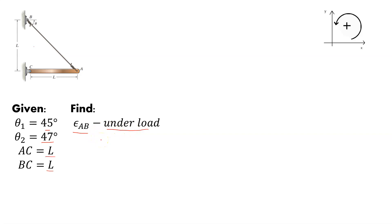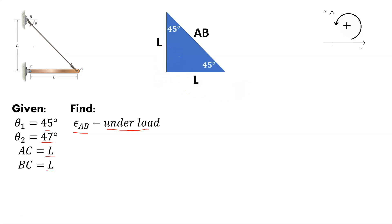When we look at this setup, we can think of it as an isosceles right triangle. We have two legs of the same size, both of length L, two 45-degree angles, and a 90-degree angle. The length of the hypotenuse we'll call AB. This is the unloaded condition — no load.